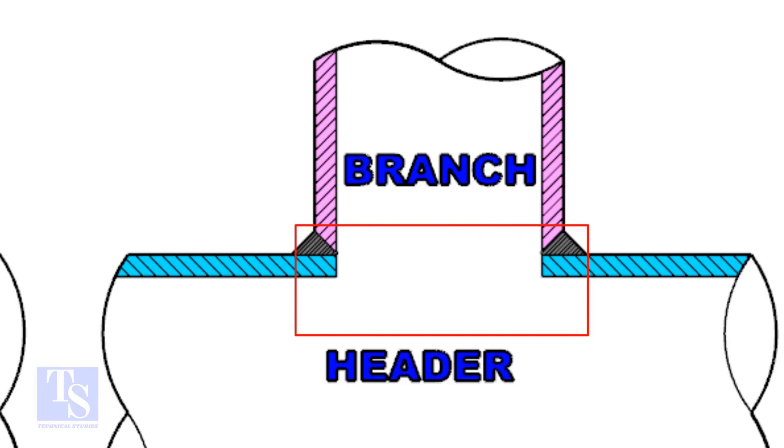And on the header pipe, a hole is there. The diameter of the hole on the header pipe is the same as the inside diameter of the branch pipe.